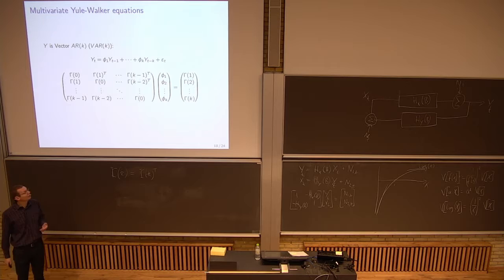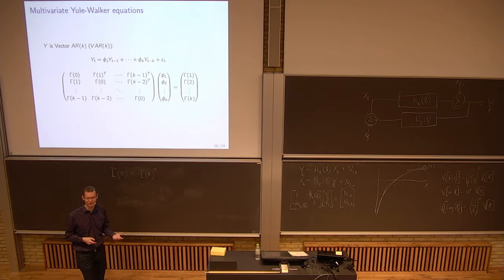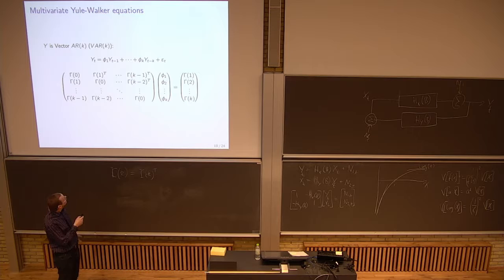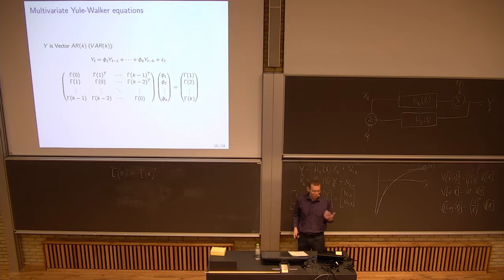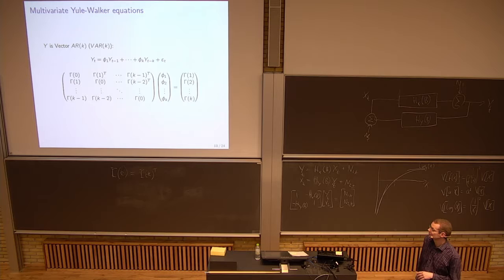The Yule-Walker equation is this: basically, we just do this for different values of k, and we write it up. Then we can find a system of equations that can be solved. You have gamma from gamma 0 to gamma k, and you have these coefficients that you know, and then you just solve for that. That's one way of doing this. That's basically what happens in software.